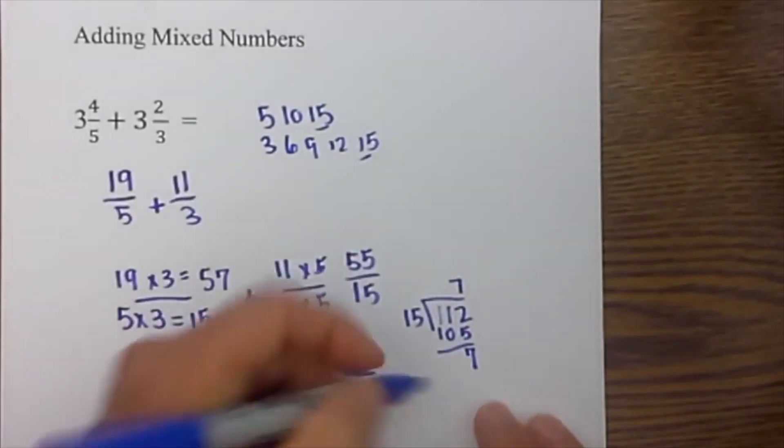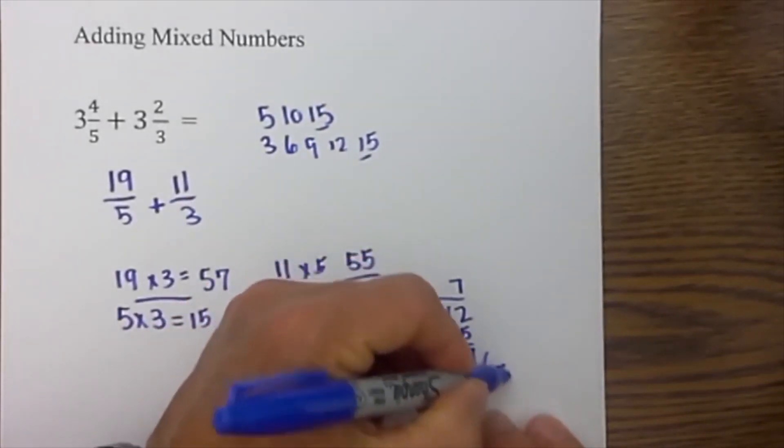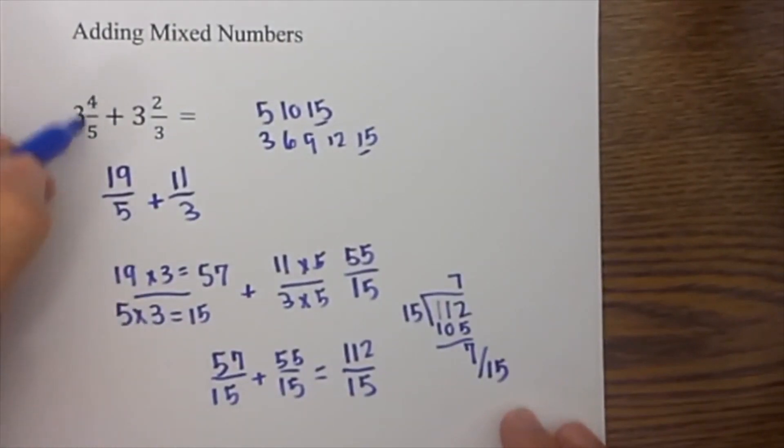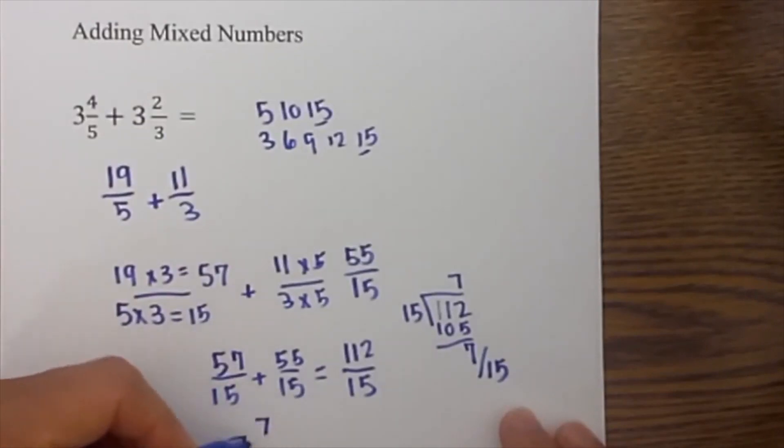So 7 is left over, so that becomes 7 and 7/15. So 3 and 4/5 plus 3 and 2/3 is equal to 7 and 7/15.